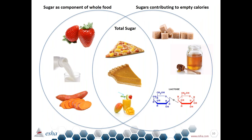Here's an example of the types of sugars we find in foods. On the left, sugars that are a component of whole foods — like sweet potatoes, strawberries, and milk — are consistent with naturally occurring sugars. On the right, sugars like isolated lactose, brown sugar, and honey contribute only toward sugar and carbohydrates and are considered empty calories. In the middle are foods containing both: a pumpkin pie may have naturally occurring sugar from pumpkin puree, but the added brown and white sugar are added sugar. A smoothie contains naturally occurring fruit sugar but may also have honey added to sweeten it.